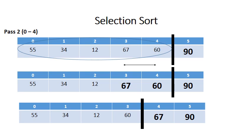So when the 67 and the 60 are swapped, then the elements at four and five are sorted, and the list from zero to three still needs to be sorted.